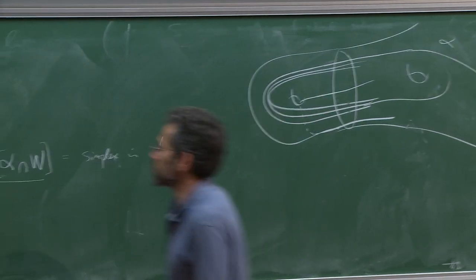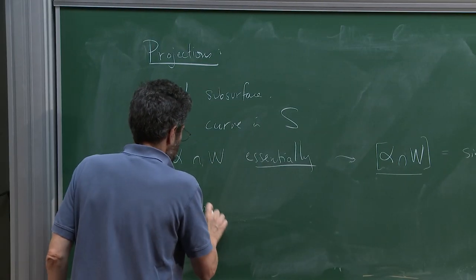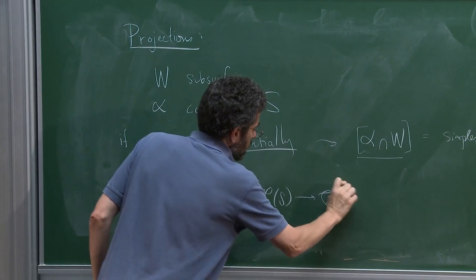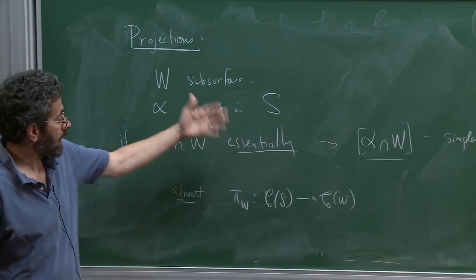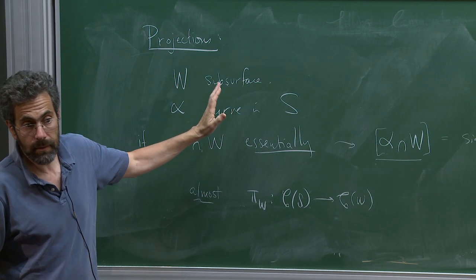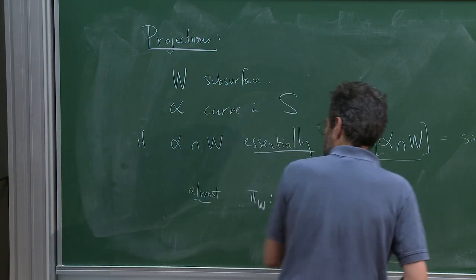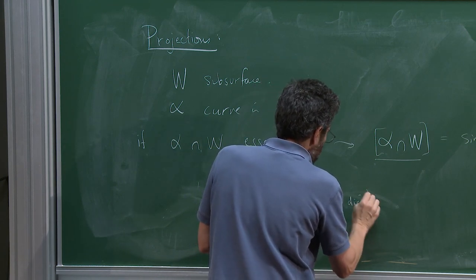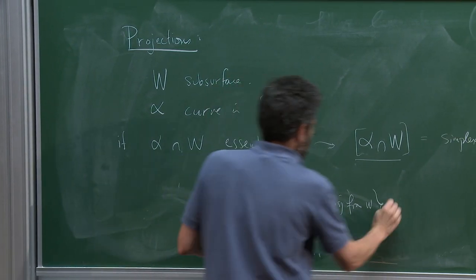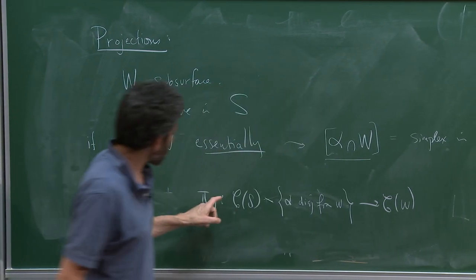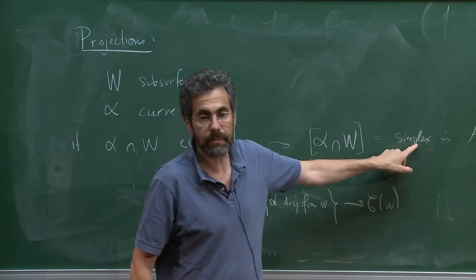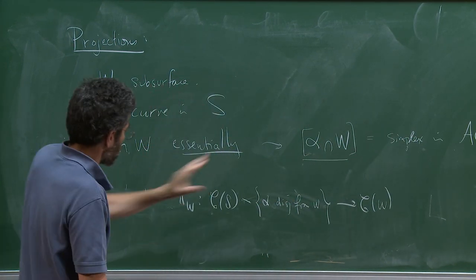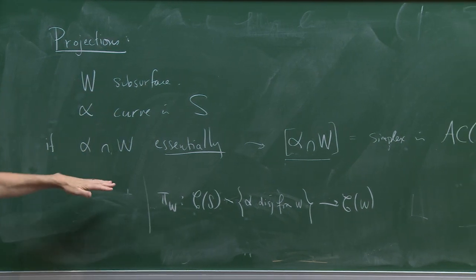This produces almost a map pi_W from the curve complex of S to the curve complex of W. It's not all of the curve complex of S because I can't do it for the curves that are disjoint from W. So maybe I should write an actual map from C(S) minus {alpha disjoint from W} to C(W). If I want it to be an actual map, I should maybe pick a point in the simplex — at the cost of making an arbitrary choice, I can make this just a single point.